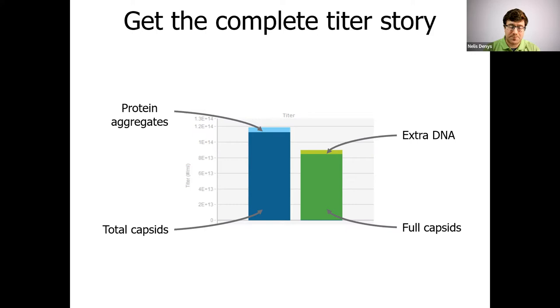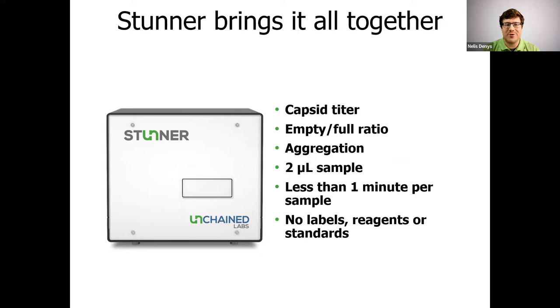So that is how Stunner brings it all together to deliver answers on capsid titer, empty full ratio and aggregation with only two microliter sample in less than a minute. And there's no labels, no reagents, no standards. You just use the sample you have.